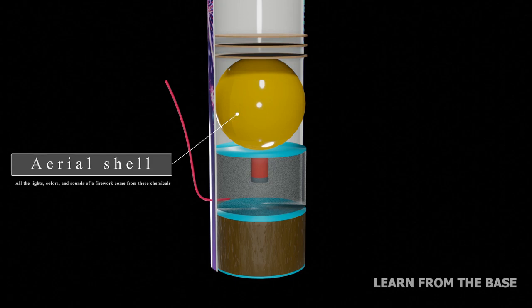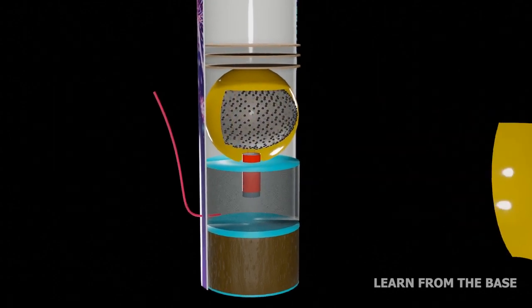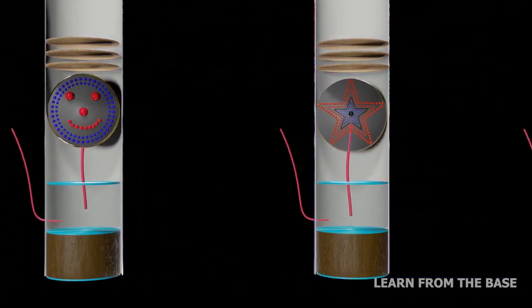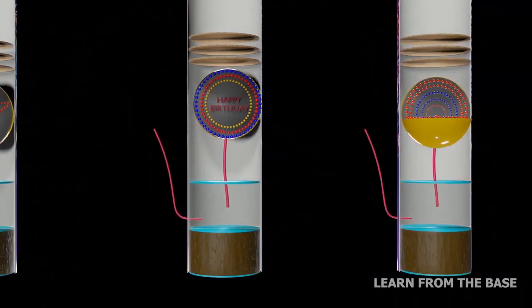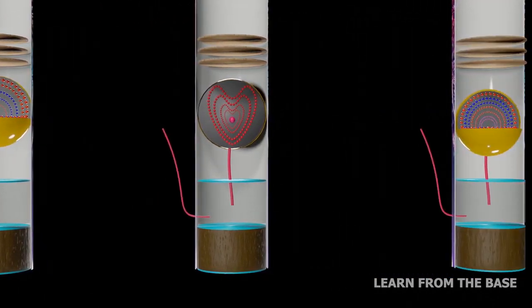This is the main part of the firework, the aerial shell. Inside the aerial shell, the pyrotechnic pellets are arranged in a specific shape. That shape will display when the fireworks explode in the sky. Meaning that, the shape of the firework explosion is based on the pellets arrangement inside the shell.